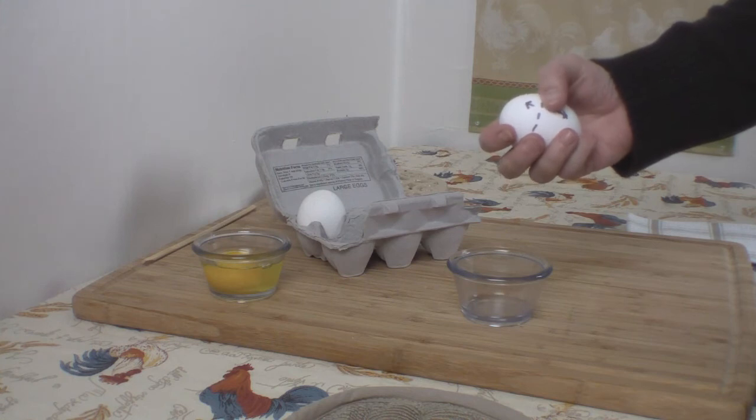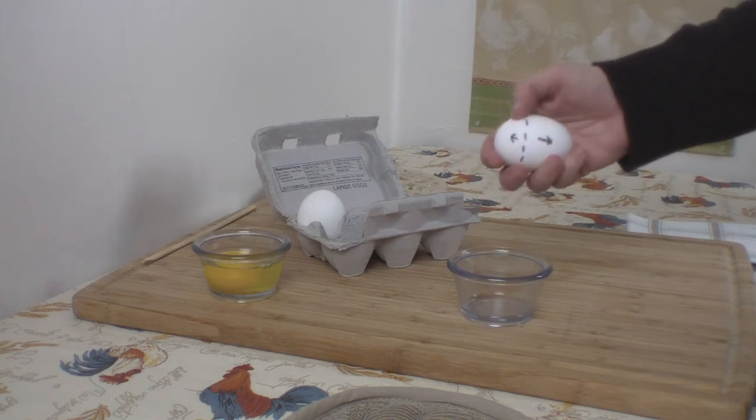What you're going to do is crack the egg on a flat surface right around the widest part of the egg and then use these fingers to pull the shell apart.